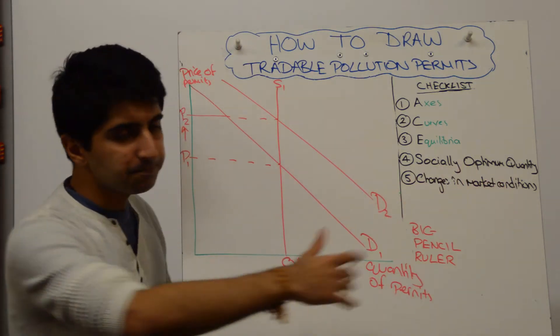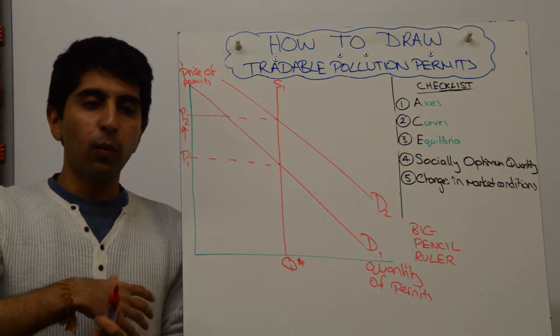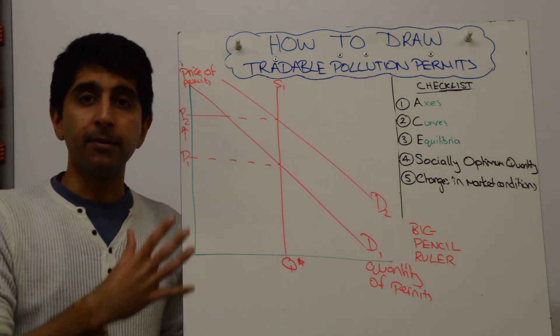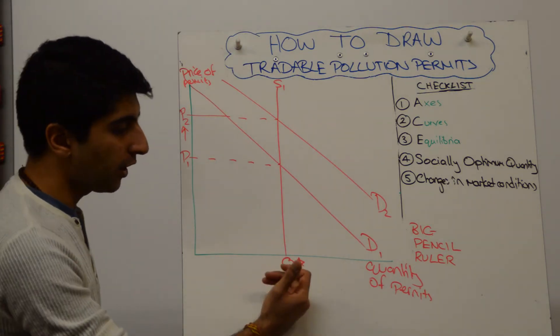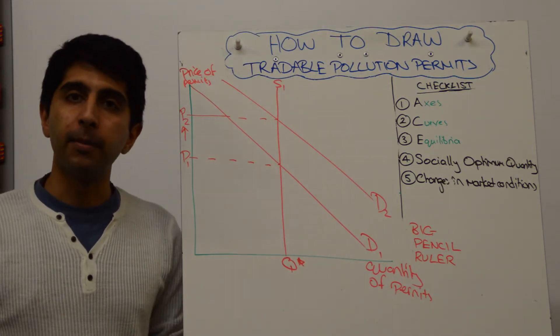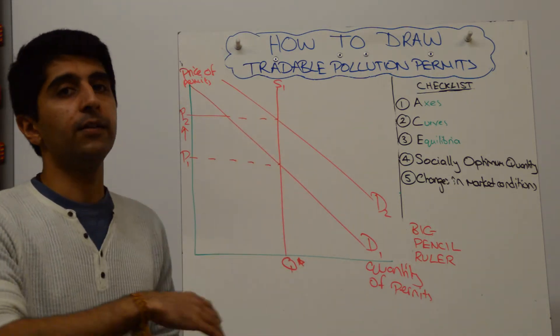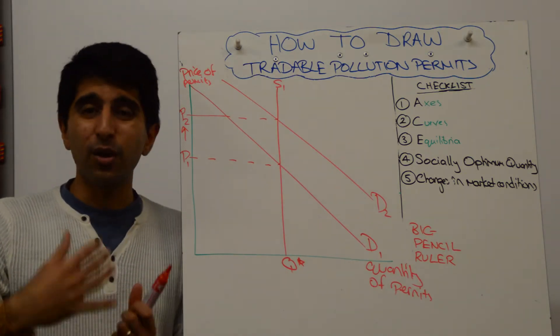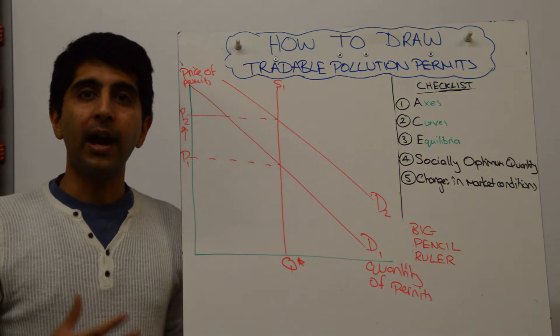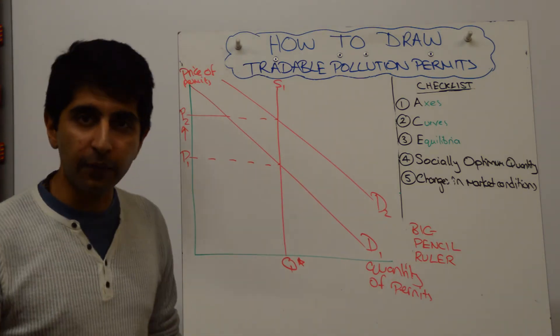You might want to also add on this diagram what the government may do if the scheme is successful. What they may do over time is to reduce the number of permits in the market. So they might think that this policy has been so successful that we can actually try even further to reduce pollution. And the way they would do that is to take permits off the market.